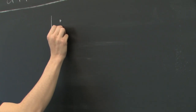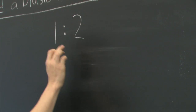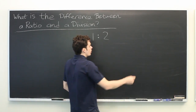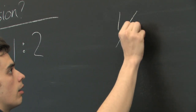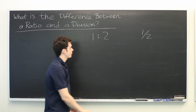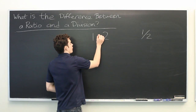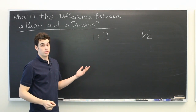Well, for starters, the notation is a little bit different. A ratio is usually indicated by a colon, whereas division is typically indicated by a slash. Of course, this doesn't really say much about the fundamental meaning of it, but it is an important thing to take note of.